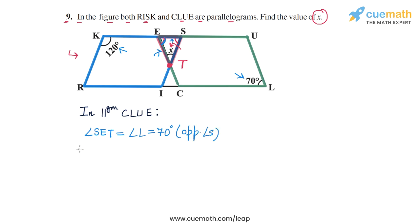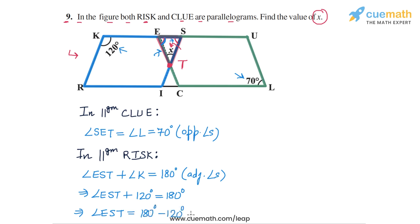Now, let's find the angle at S. In parallelogram RISK, the angle at S, which is angle EST, forms an adjacent angle to the angle at K, which is 120 degrees. So we can write angle EST plus angle K equals 180 degrees because these two angles are adjacent angles in a parallelogram. So angle EST plus 120 degrees equals 180 degrees. This means that angle EST equals 180 minus 120, which equals 60 degrees.